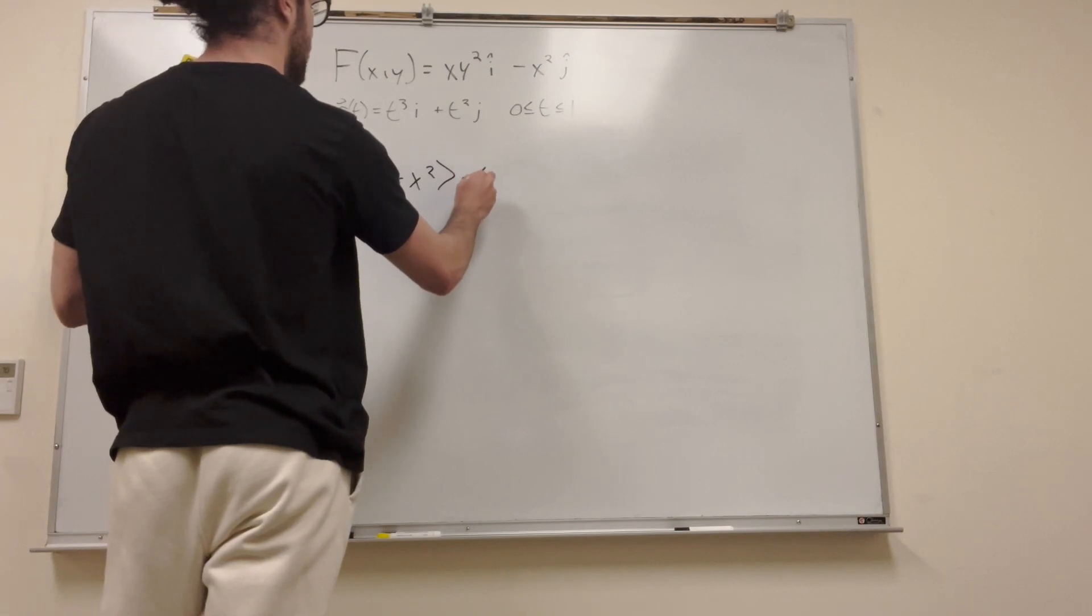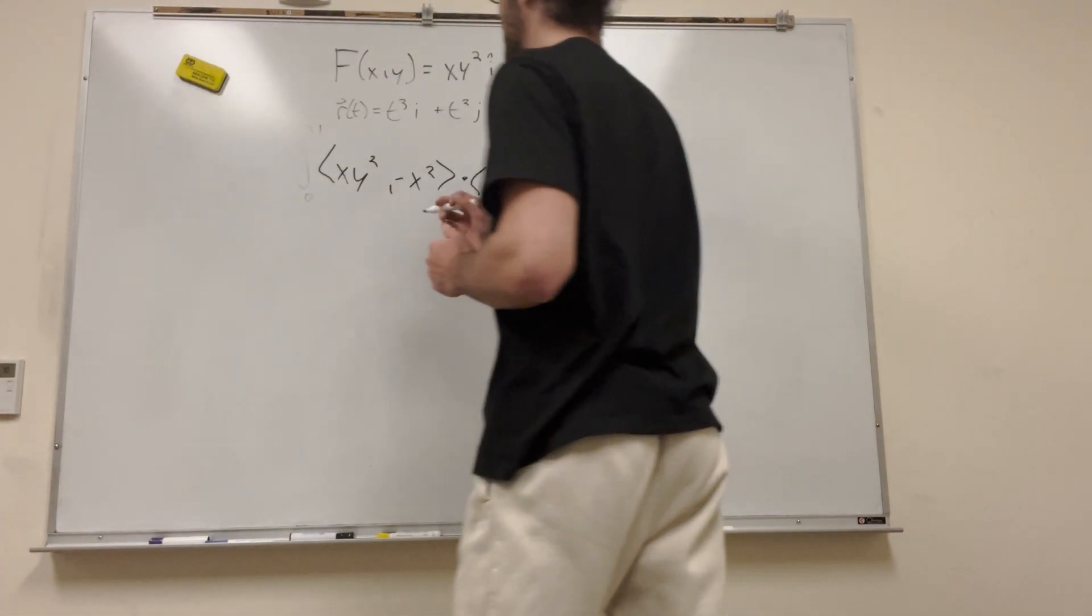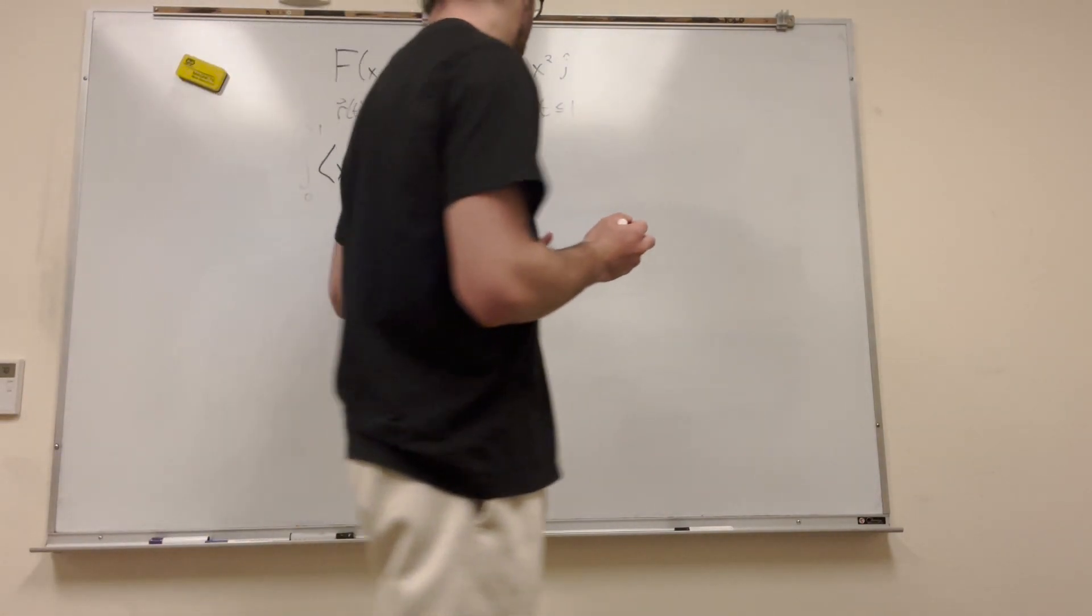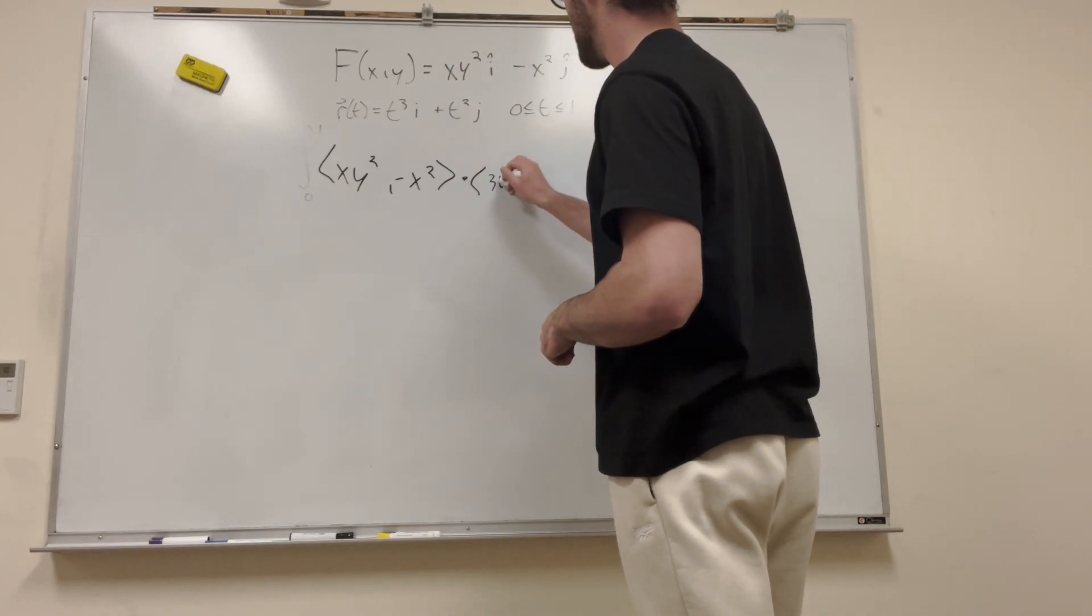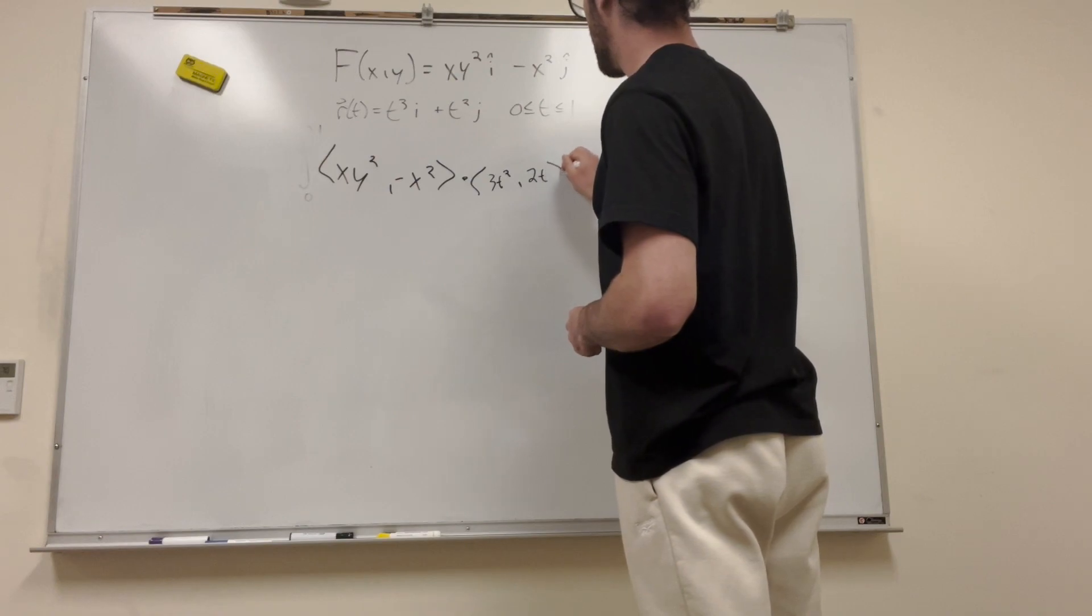dotted with our velocity vector, but the derivative of it. So let's go ahead, you guys know what this is. The derivative of t cubed is 3t squared, and then t squared is 2t, obviously, dt.